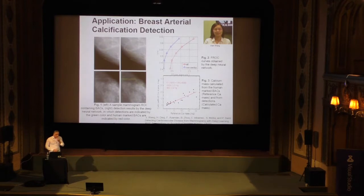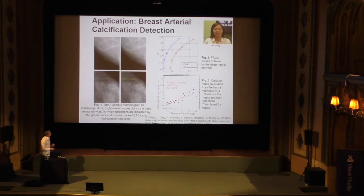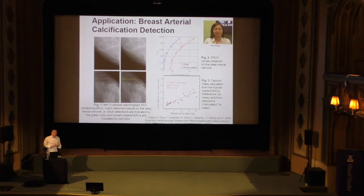Let me finish with a couple of applications of deep learning to biomedical imaging. Here we're looking at mammograms — X-rays of breasts taken to detect cancer. We look at blood vessels and how much calcification is present on those blood vessels. We can do regression to estimate the total amount of calcification. High levels of calcification are a potential sign of cardiovascular disease, so as a byproduct of breast cancer screening, you can also screen for high risk of cardiovascular disease.